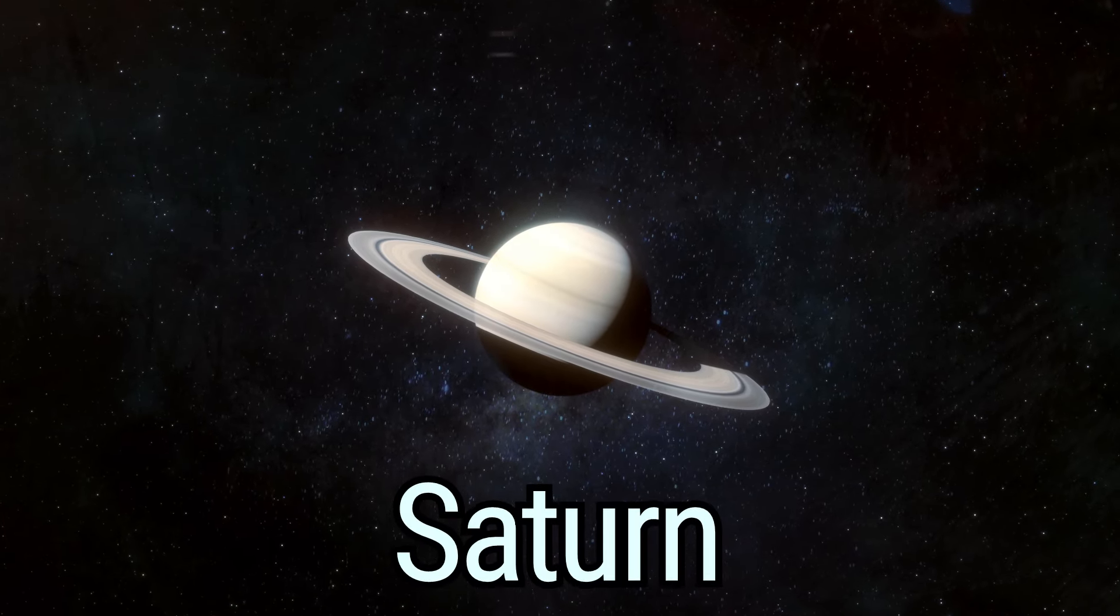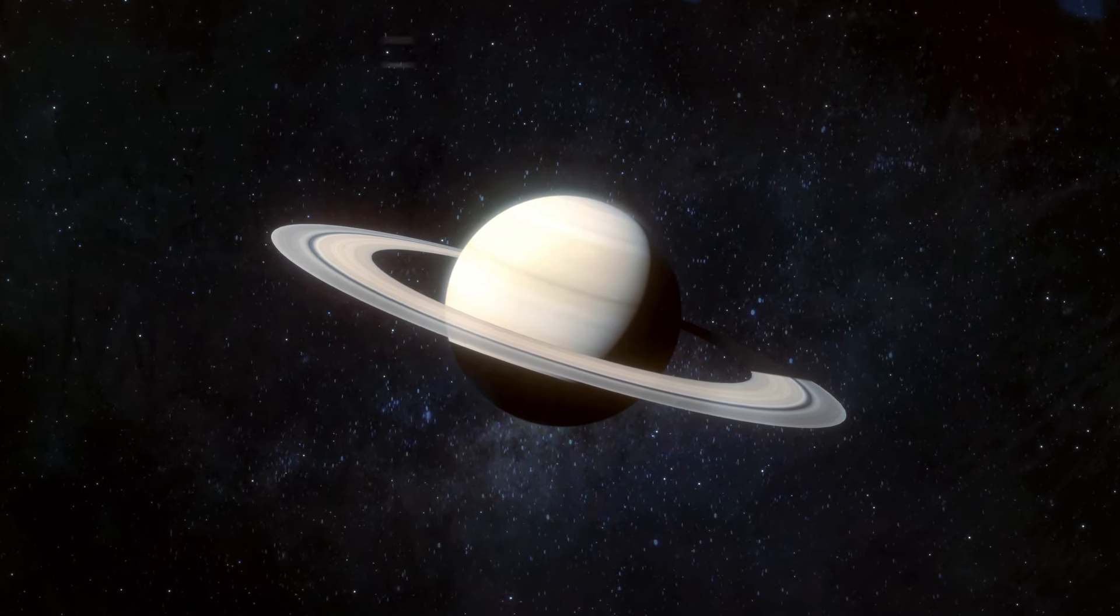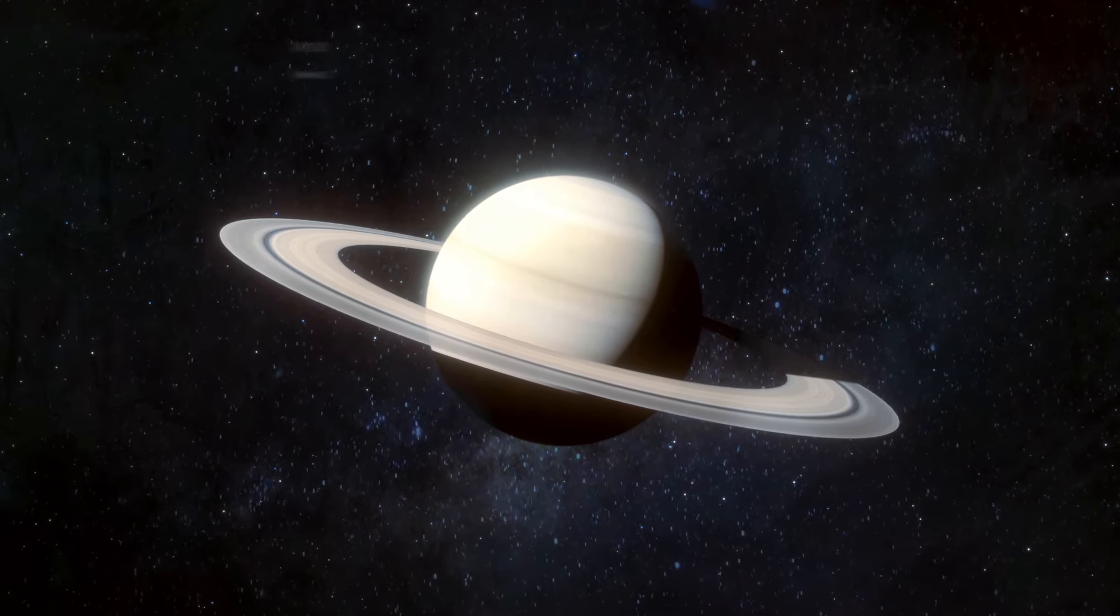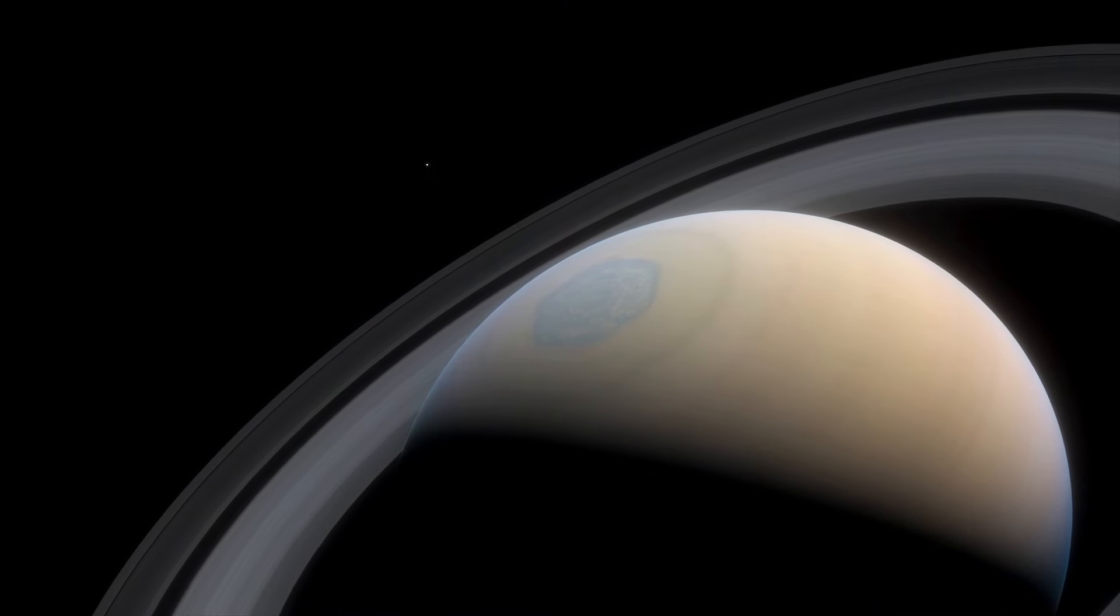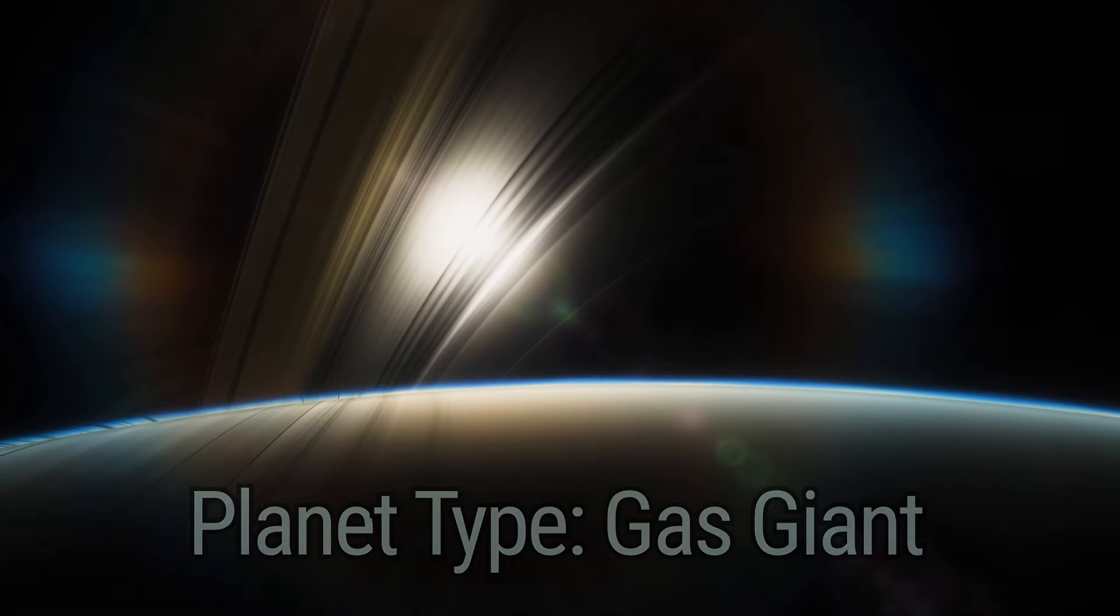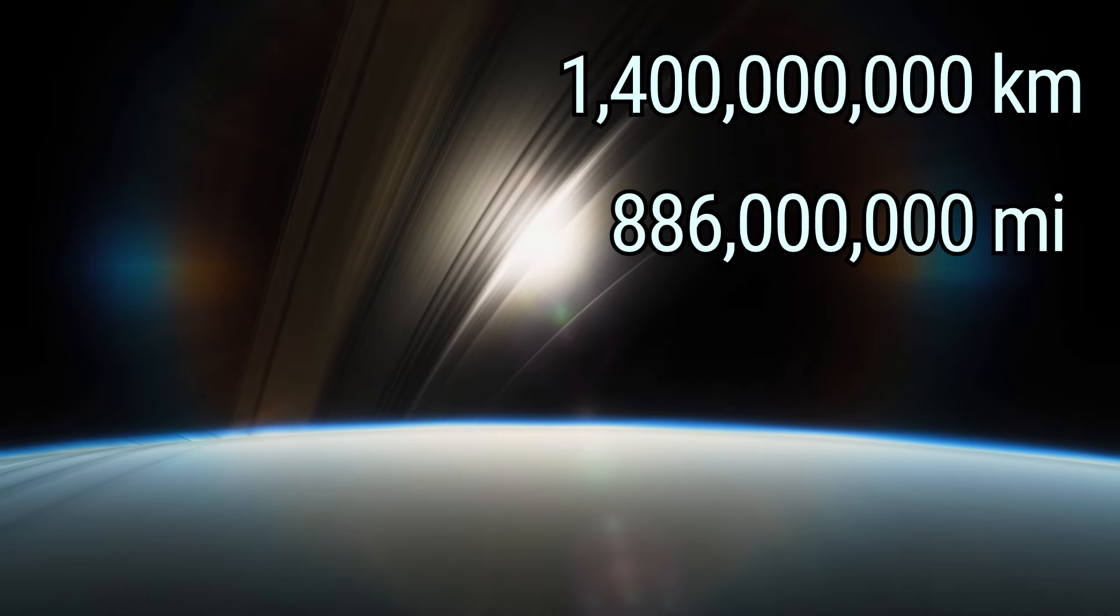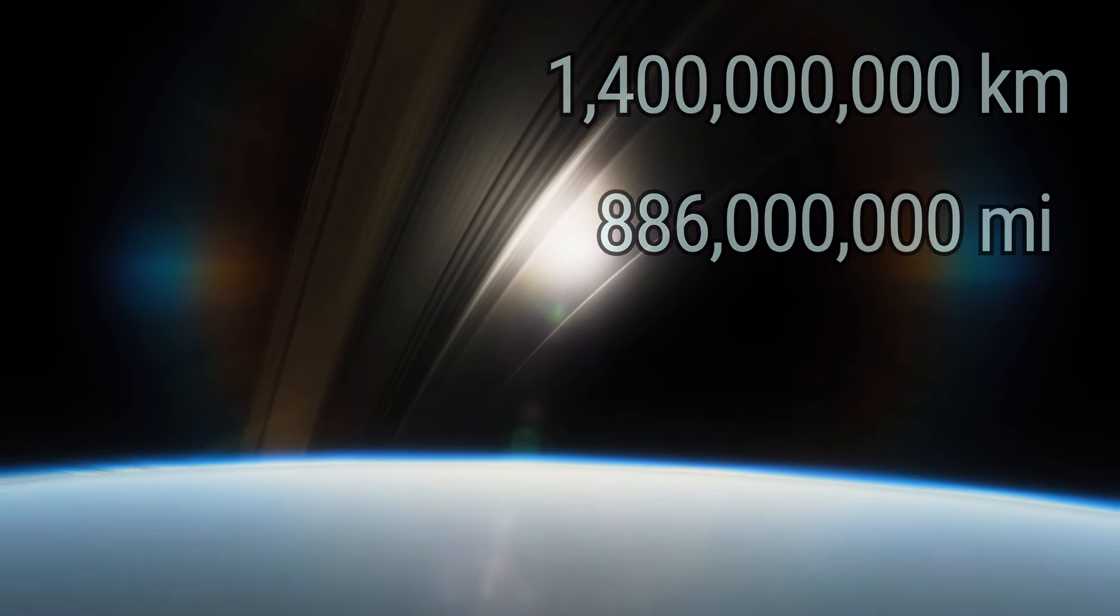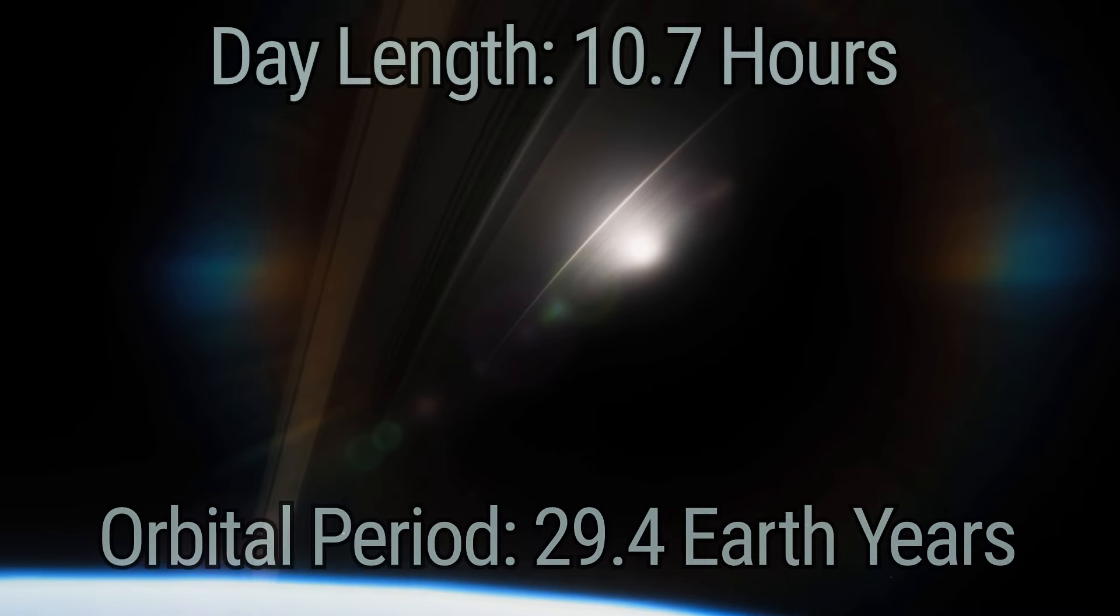Next up on our journey is Saturn. The ringed maestro conducts a symphony of celestial beauty with its iconic rings. Like Jupiter, Saturn is also a gas giant type planet. At a distance of 1.4 billion kilometers, or 886 million miles, Saturn takes 29.4 Earth years to orbit the Sun, with a day lasting just over 10.7 hours.